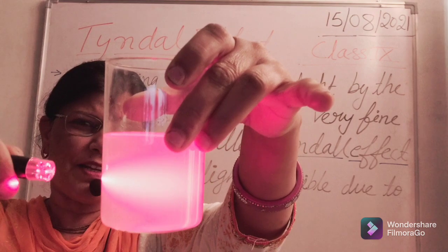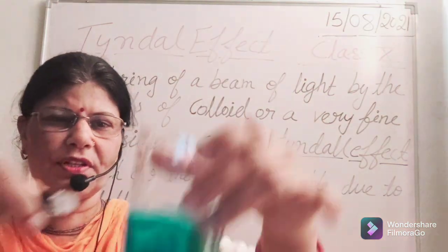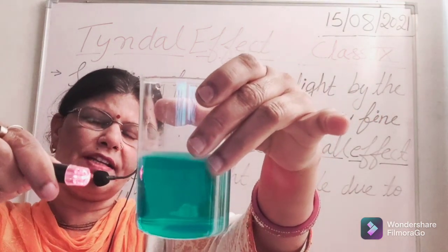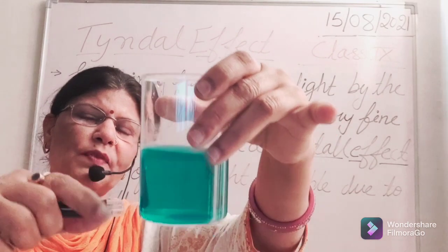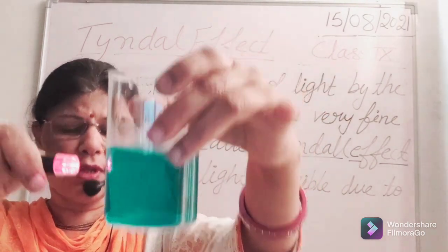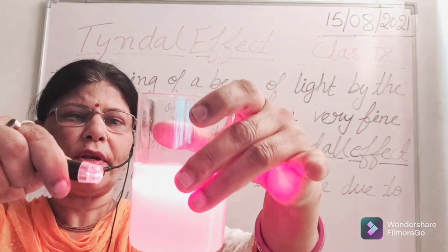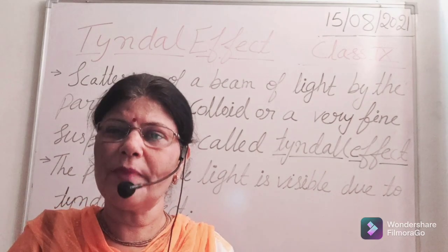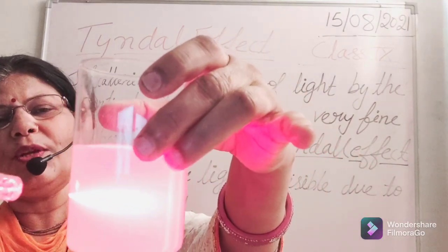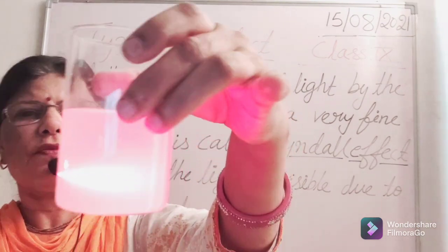Here the light is scattered by this solution. Let us compare it with the copper sulphate solution — there is no scattering of light; the path of light is not visible through the true solution. But when we consider this colloidal solution — the solution of milk in water — the path of the light is visible. You can see the colour of this light.